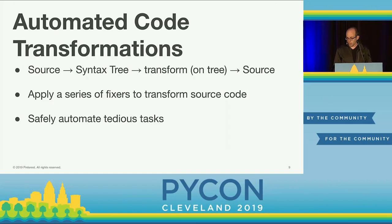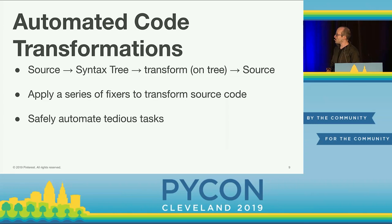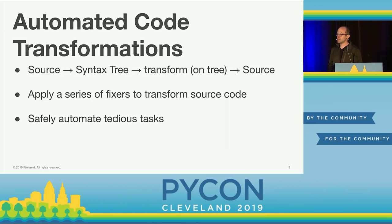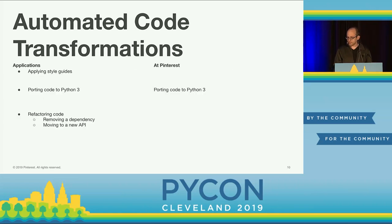Automated code transformations have a few ways of working, but the most common is: you take source code, convert it into a syntax tree, do a transformation on the tree — sometimes called code mods or code transformations — modify the syntax tree, then convert it back into source code. You apply a series of fixers, each doing one thing, maybe a dozen or several dozen applied sequentially. This is a fairly safe way to automate very tedious tasks.